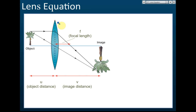Let's talk about lens equations. We have a lens with an object forming an image. The distance from the optical center to the principal focus is called the focal length, denoted by f. The distance from the object to the optical center is called the object distance, denoted by u. The distance from the image to the optical center is called the image distance, denoted by v.